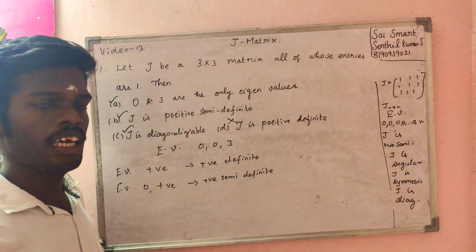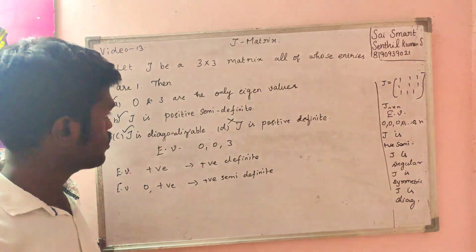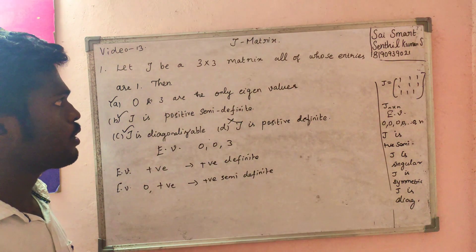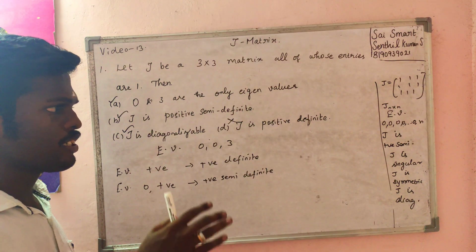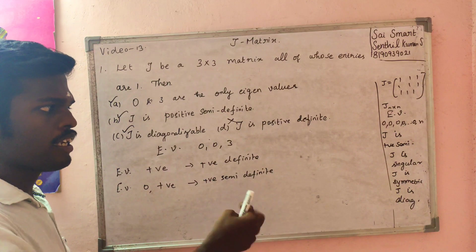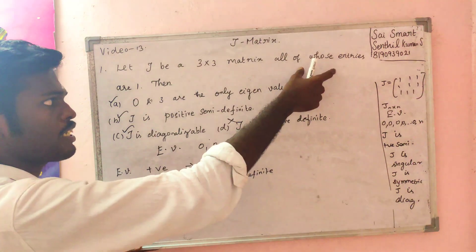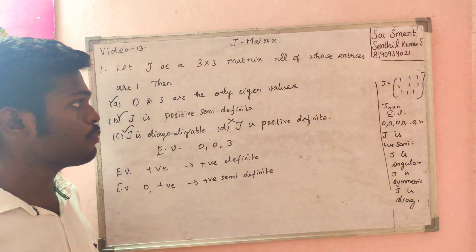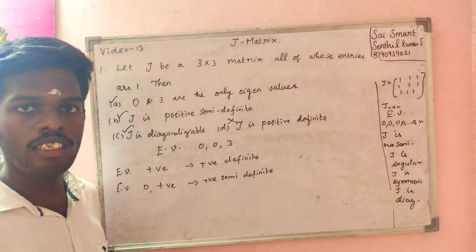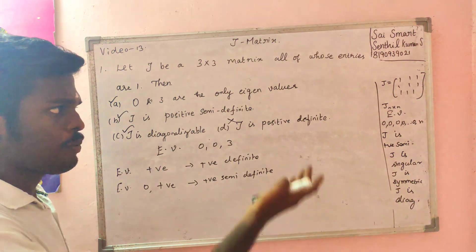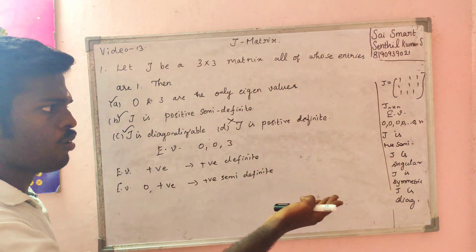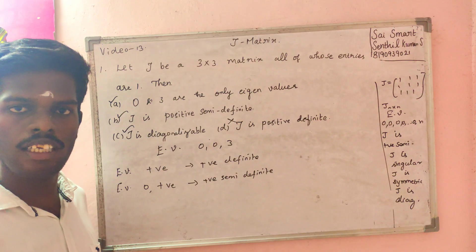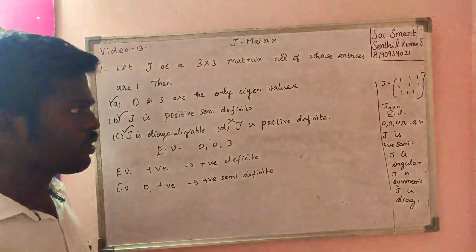These are all the contents we have learned in this session. J-matrix is nothing but an n×n matrix whose all entries are 1. If you know the properties, you will be able to solve problems more easily.